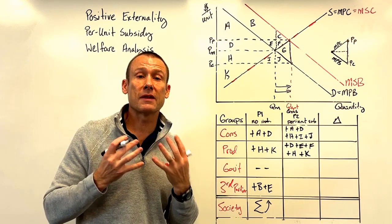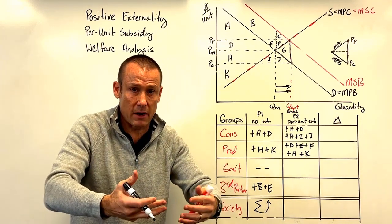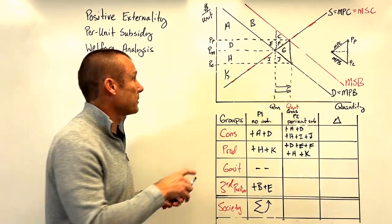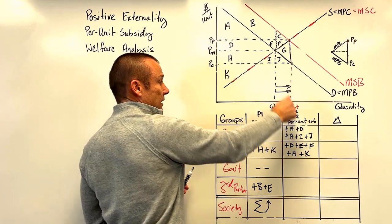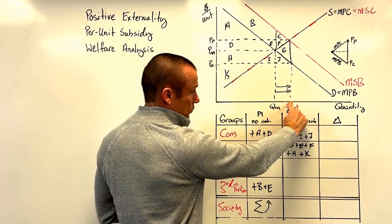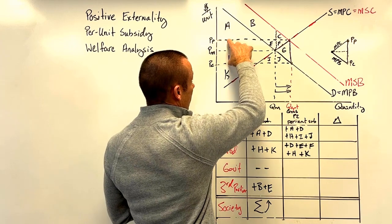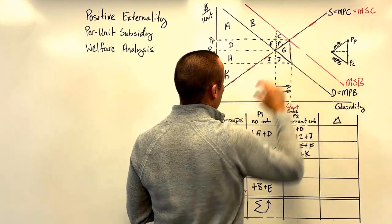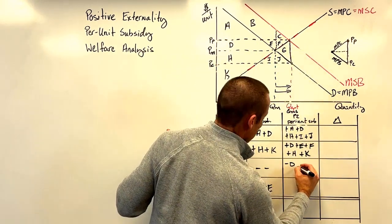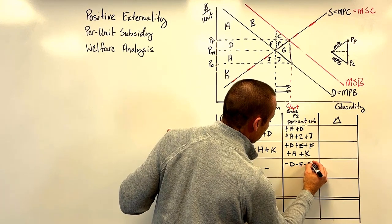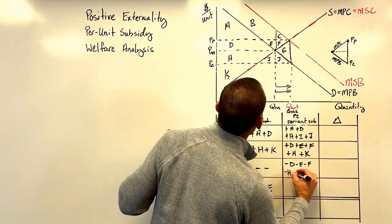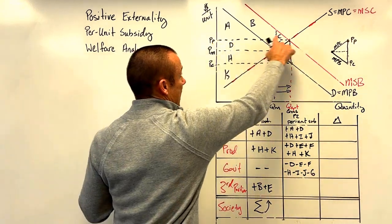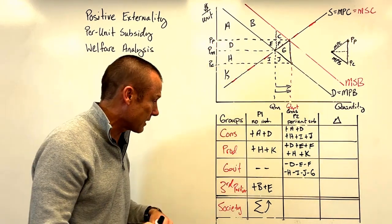For the government, this is an outlay — they're expending money. The per unit subsidy goes all the way out to Q-sub, covering that entire rectangle. So the government's cost is minus D minus E minus F minus H minus I minus J minus G. That entire rectangle represents the government outlay — they're spending that money.